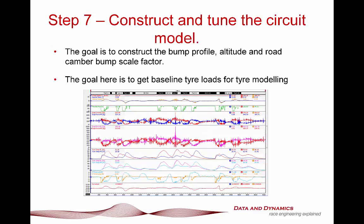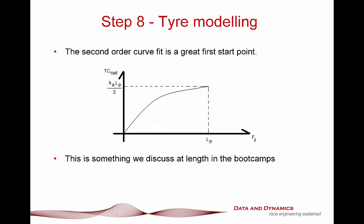Step seven: construct and tune the circuit model. You want to construct your bump profile, altitude, and road camber scaling factor — I cover this in the ChassisSim 101 tutorial and in the boot camps. The reason we do this at this stage is to get a good baseline for tire loads going into step eight: tire modeling from scratch, where we use the traction circle radius second-order approximation to get us into the ballpark. Once you've got this, you can use ChassisSim tire force modeling to refine the result.